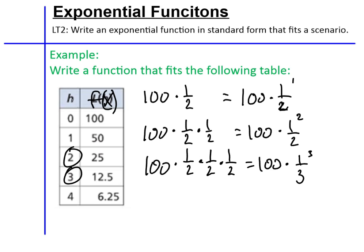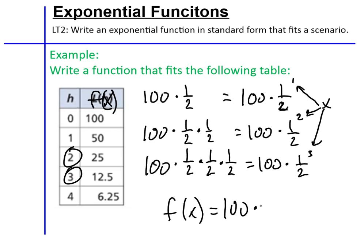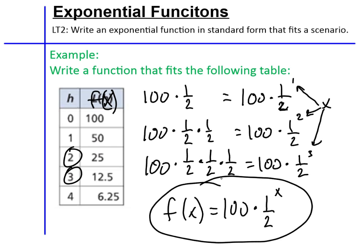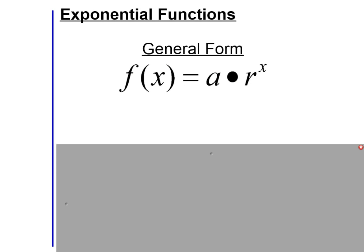Now I can see that all of my x values — my inputs — are actually the exponents. The 100 is my starting value, and one-half is what we're doing to 100 to reach each new output. So my function for this table is: starting at 100, cut it in half a certain number of times. The general form for exponential functions is f(x) = a · rˣ.